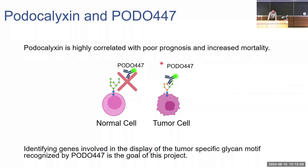Our lab has created an antibody titled POTO447. POTO447 selectively targets the cancerous aberrantly glycosylated form found in cancer. My project takes up the role of identifying genes involved in the display of the tumor-specific glycomotif that POTO447 recognizes.